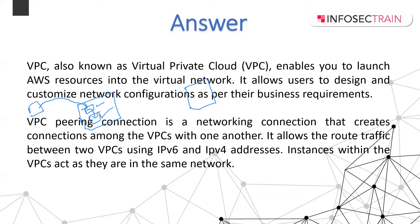Advantages of VPC include high scalability and reliability. It provides instance scalability so you can instantly scale resources up or down. You can select the Amazon EC2 instance type and size right for your application. It also helps save costs as there are no upfront costs. VPC peering connection is a network connection that creates a connection among VPCs and allows routing traffic between two VPCs using IPv6 and IPv4 addresses.